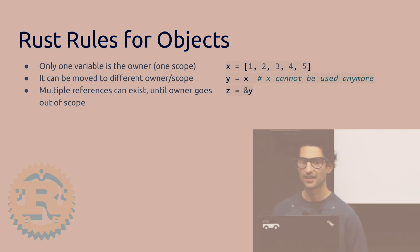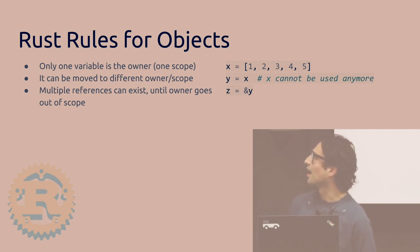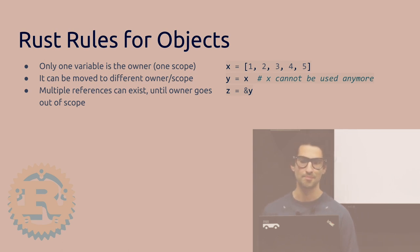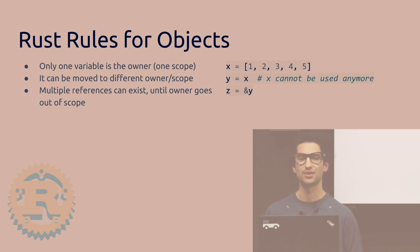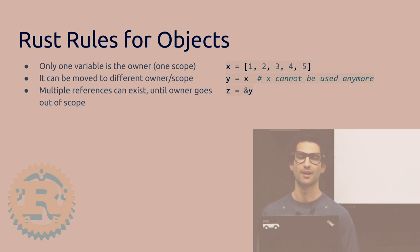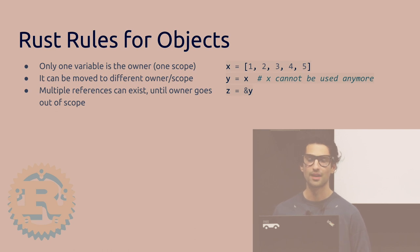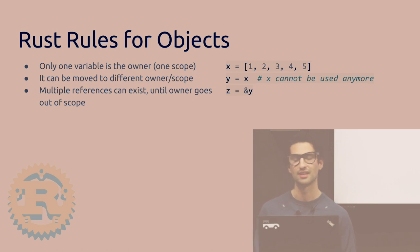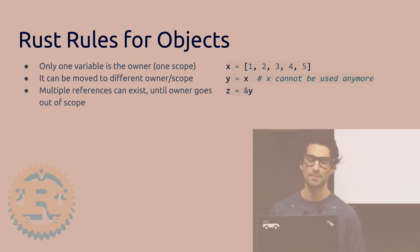In Rust, if you assign the list to Y, the variable X can no longer be used, because the owner is now Y. If you try to print X, the code will not compile. You can still have multiple references like in Python, but you have to use the ampersand symbol to explicitly make that. And if the owner goes out of scope while you still have a reference to that variable, it's going to be a compiler error.